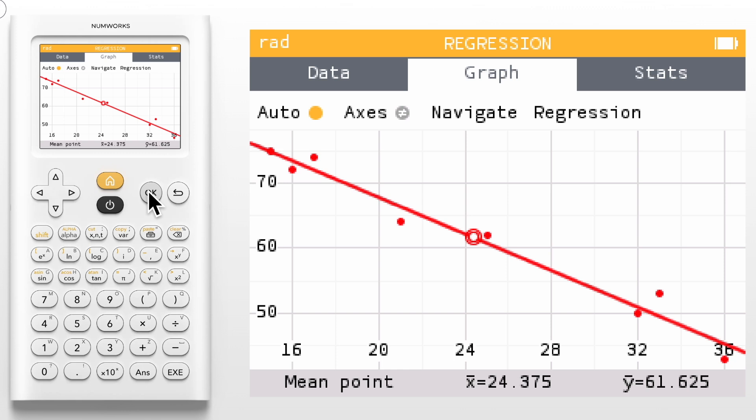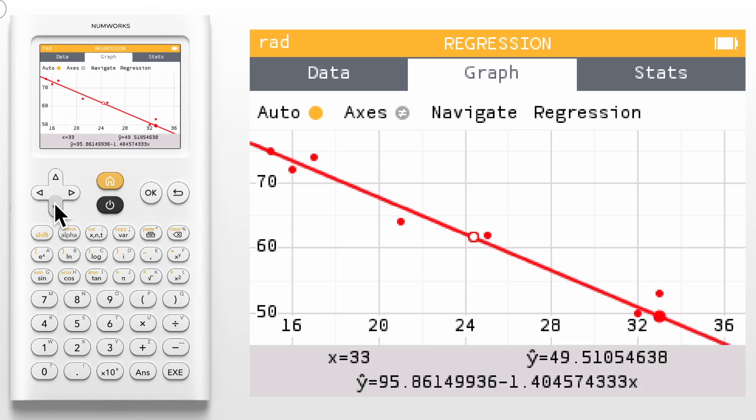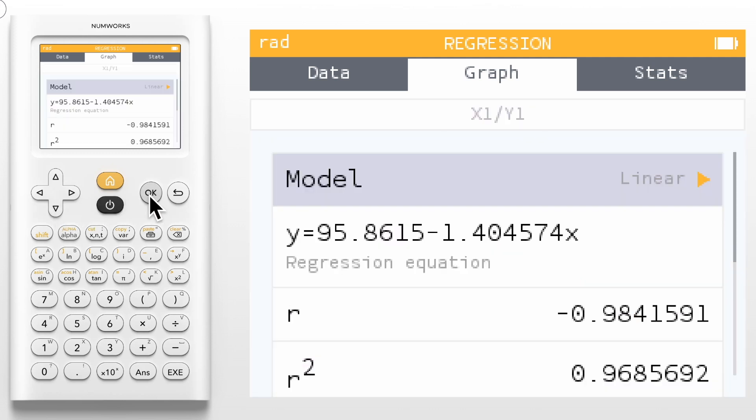Notice that it provides you with a point corresponding to the means of X and Y and shows that the regression line goes through this point. Now let's navigate to a data point using the right arrow key. Here I am at X equals 33 and Y equals 53. Since we are above the model we can navigate down to the line and see the predicted value of 49.51. At any moment you can press OK again to return to the regression menu.